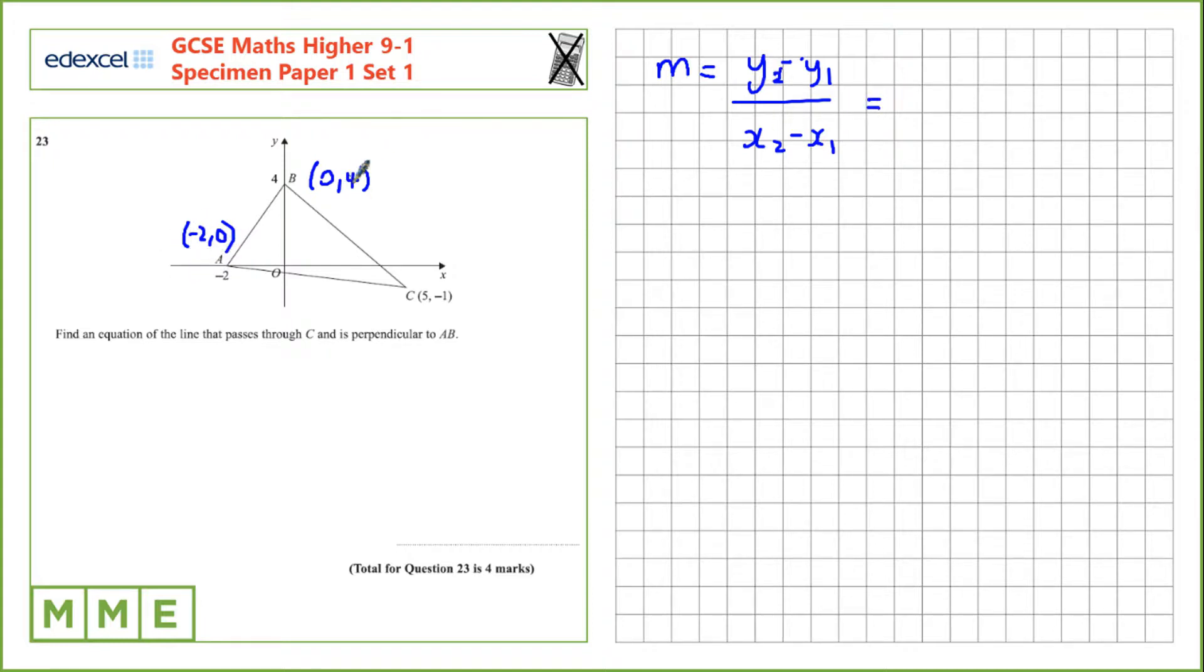So the Y coordinate for B is 4, take away the Y coordinate for A, which is 0, and the X coordinate for B is 0, take away the X coordinate for A, so that's subtract negative 2, leaves us with 4 over positive 2, which is 2.